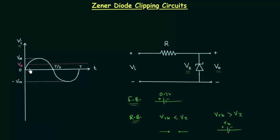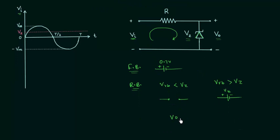For the first half cycle, the input voltage vi is positive, so the polarity of vi is plus-minus. The direction of current is clockwise, and the direction of the arrow in the zener diode symbol does not match the direction of current, so the zener diode is reverse biased. When vi is smaller than Vz, the diode is replaced with an open circuit and the output voltage vo is simply equal to vi.